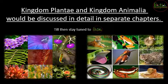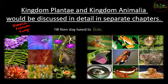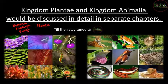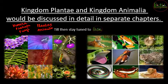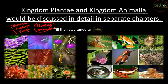In this chapter we have been speaking about the five kingdom classification. We have seen five kingdoms named as Monera, then Protista, then the third kingdom was Fungi, and after Fungi the fourth and fifth kingdoms - Plantae and Animalia. We have covered three kingdoms in the previous videos, and these are the two kingdoms left: kingdom Plantae and kingdom Animalia.